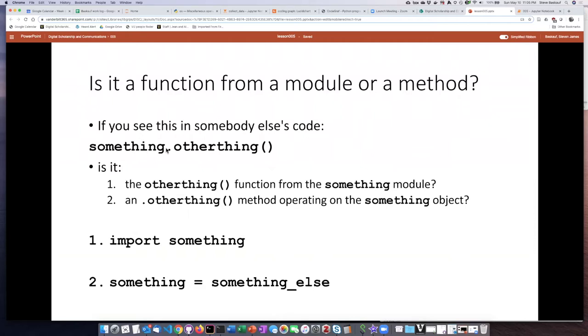If I see something dot other thing parentheses, it could mean that something is a module and this is a function from that module. Or it could mean that there's an object called something and this is the other thing method. They both look basically exactly the same.